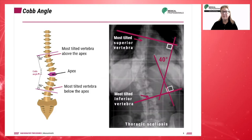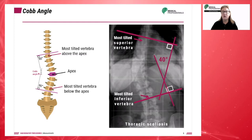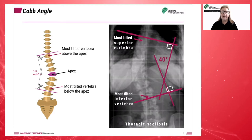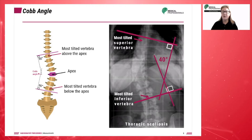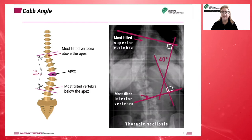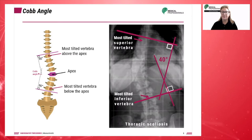Scoliosis can be defined as a lateral spinal curvature with a Cobb angle greater than 10 degrees. To measure the Cobb angle, we first select the terminal vertebrae of the curved deformity on its upper and lower edges. The terminal vertebrae are the vertebrae whose end plates are the most tilted towards each other. Then we draw lines along the end plates and measure the angle between the two lines where they intersect.